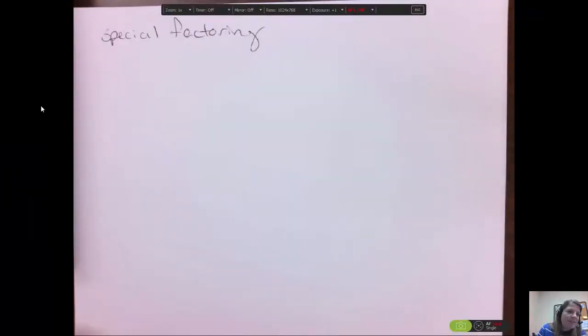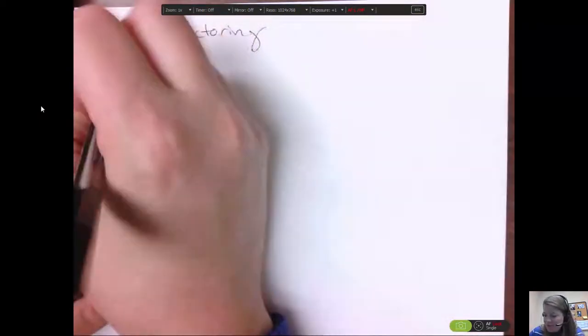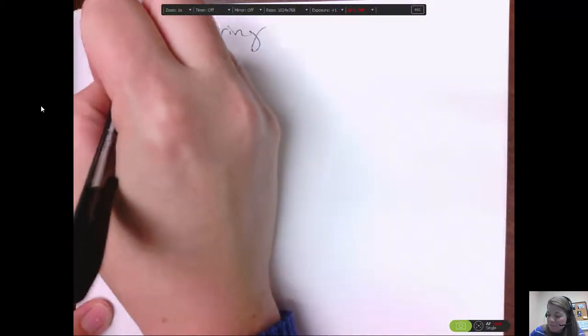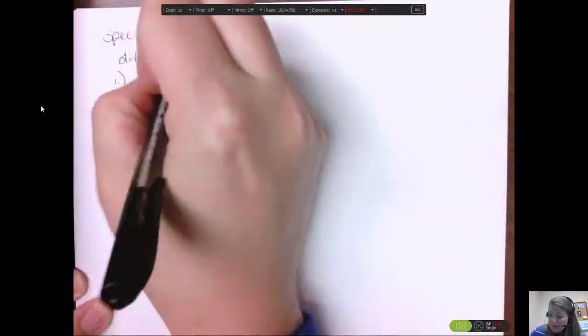This video is on 6-3 or on special factoring. Let's look at the first type of special factoring. These ones are called difference of squares.